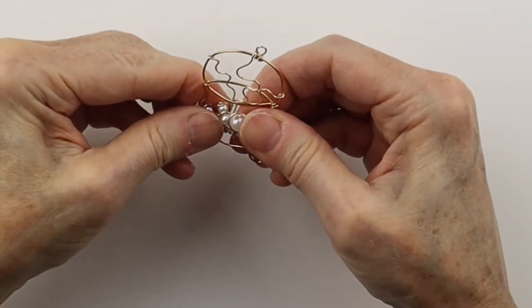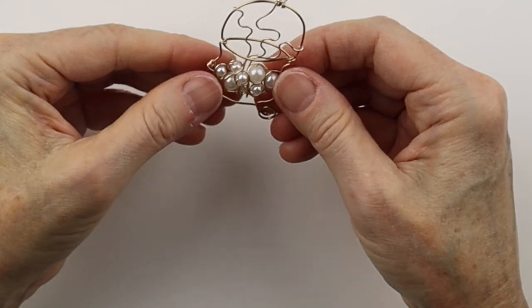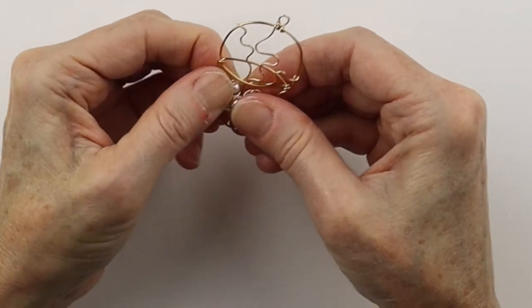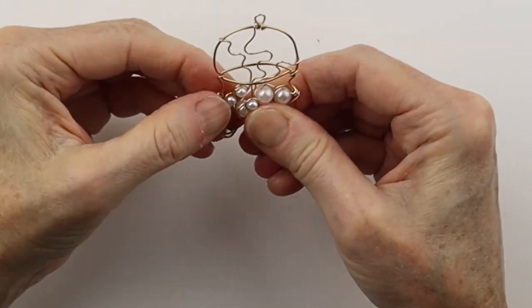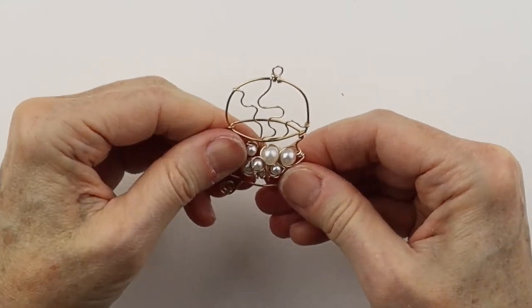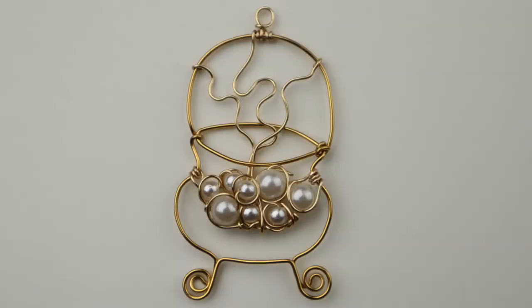Adjust these how you want. You can push them together a little more, you can push some higher than the others. Just play around with it till you like the composition. And there you have your super cute beaded cauldron pendant.